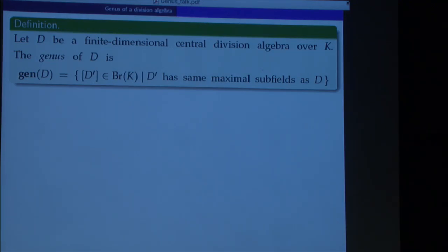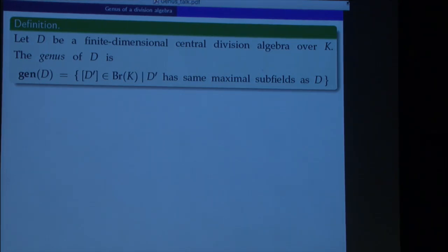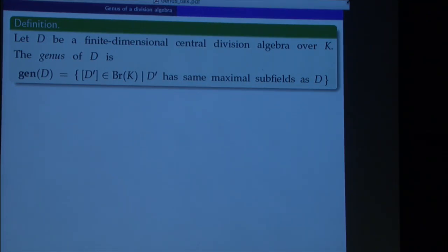We will see this local-global interplay a bit later, expressed in the analysis of ramification. The bad news is that this genus can be infinite, although this can happen only in very wild situations. Regarding whether it's the same as asking if they have the same splitting with respect to finite extensions: we use maximal subfields as our basis. Denny Krashen used finite-dimensional splitting fields, and for rational function fields we got the same results, but we don't really know whether these notions are equivalent.